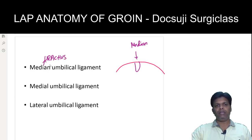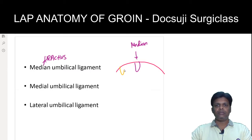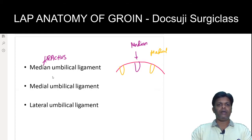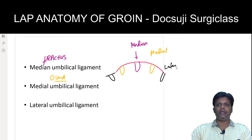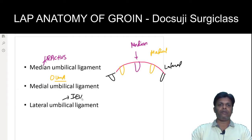The median umbilical ligament extends from the umbilicus to the fundus of the urinary bladder. On the two sides you will have two ligaments called the medial umbilical ligament, which is nothing but the obliterated umbilical artery. Just lateral to that is another ligament — the lateral umbilical ligament or fold — which is a peritoneal fold that consists of the inferior epigastric vessels.